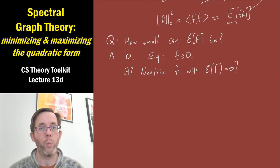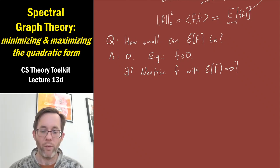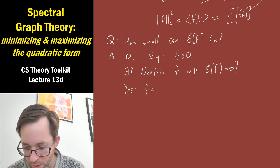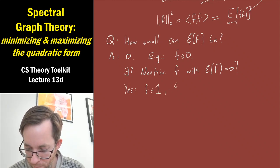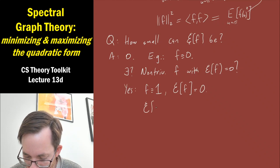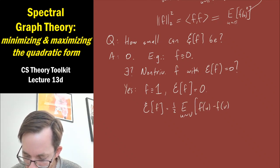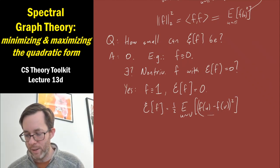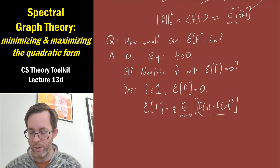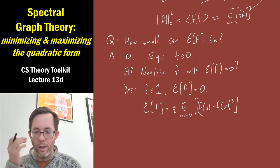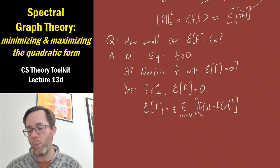Here's another function which makes the quadratic form zero: the constantly one function. If f is constantly one, then the quadratic form of f is zero. The quadratic form is one-half times the expectation over a random edge uv of (f(u) minus f(v)) squared. If f always equals one, this difference is always zero, so the expected square of the difference is also zero. If f labels every vertex by the same value, the quadratic form is zero.